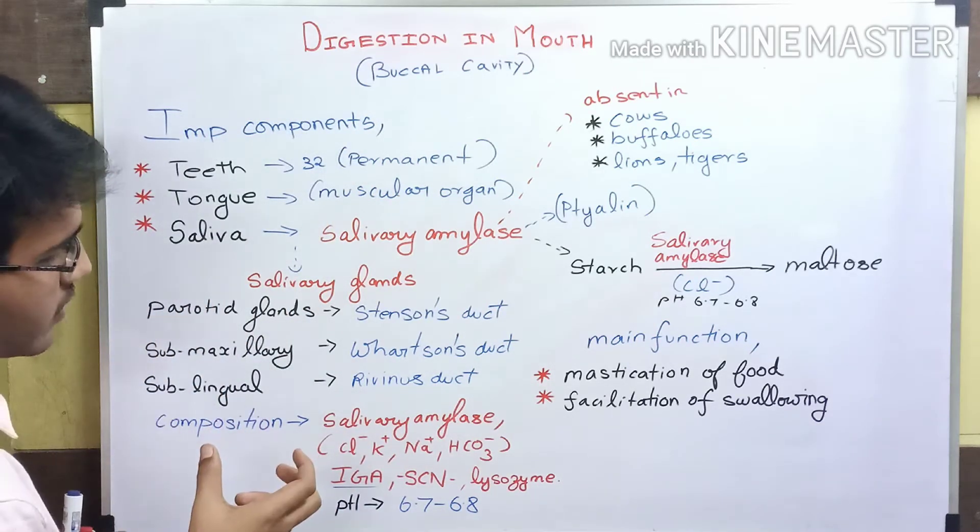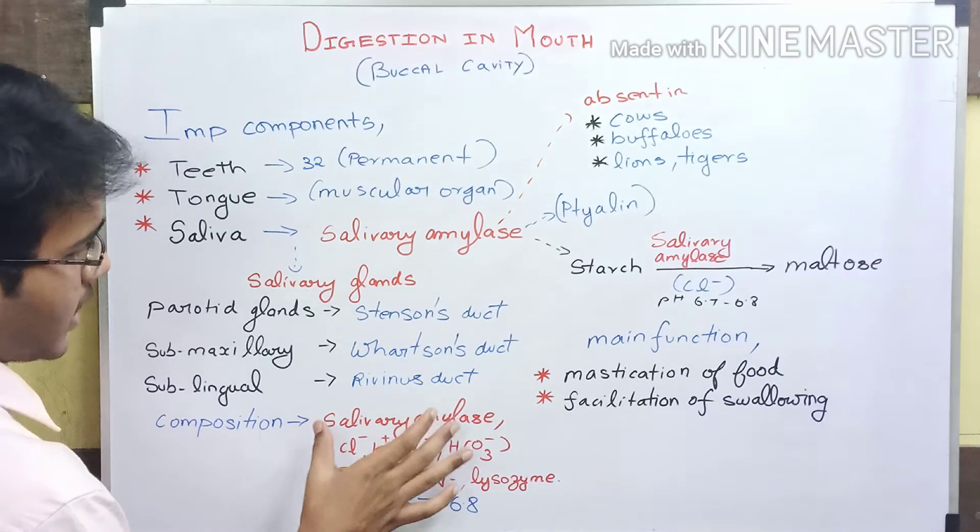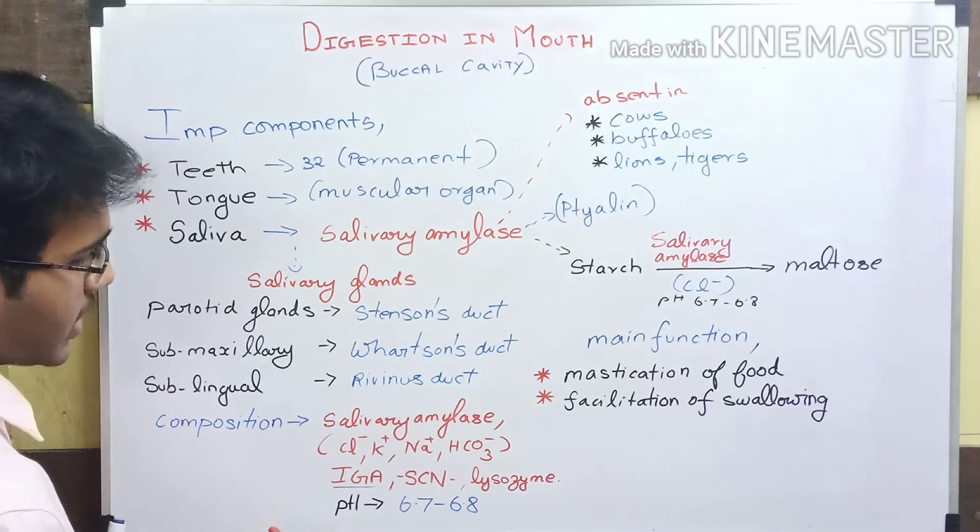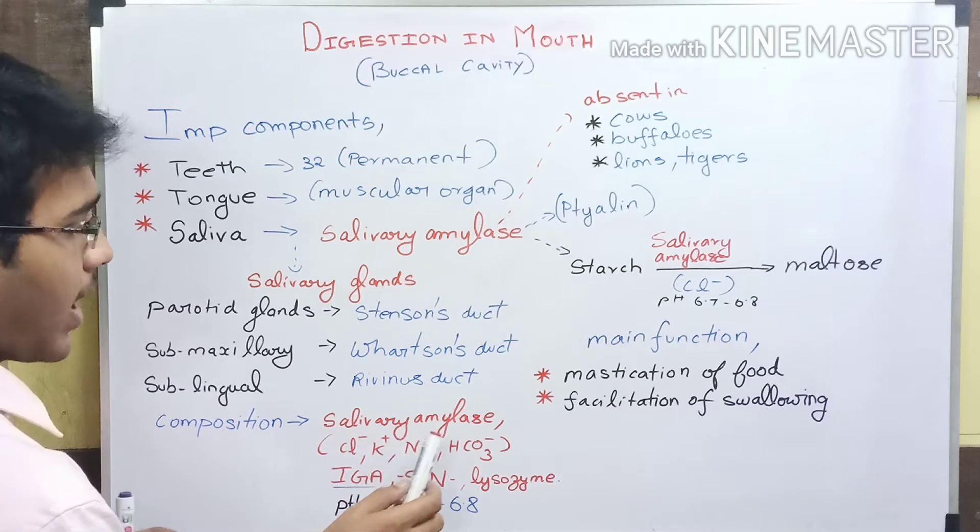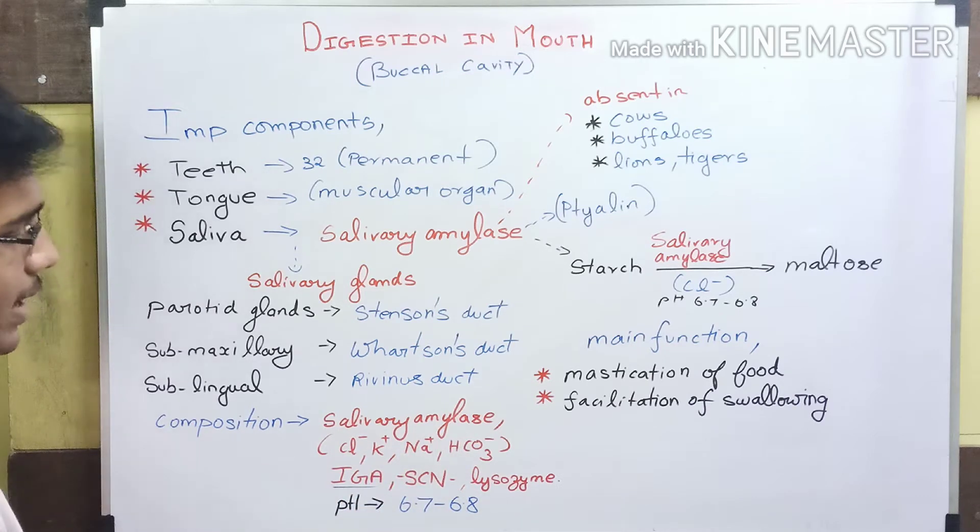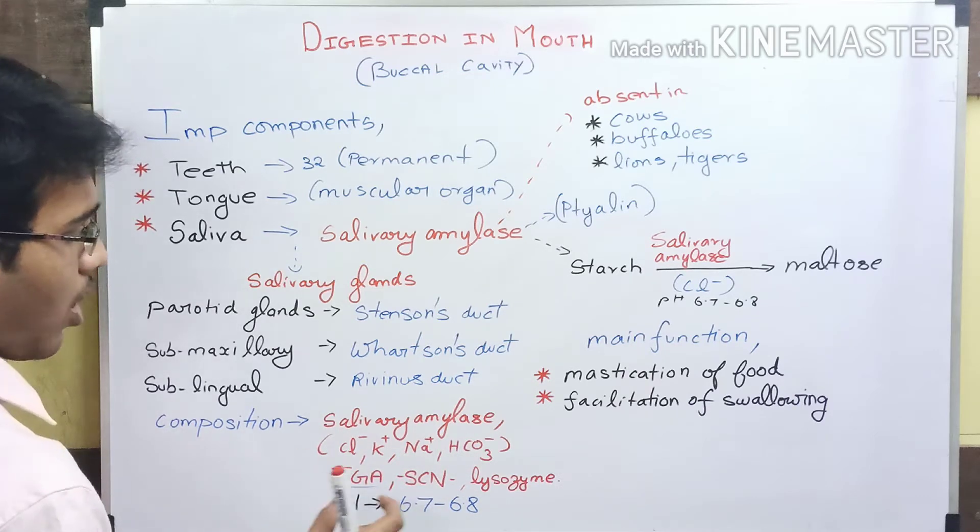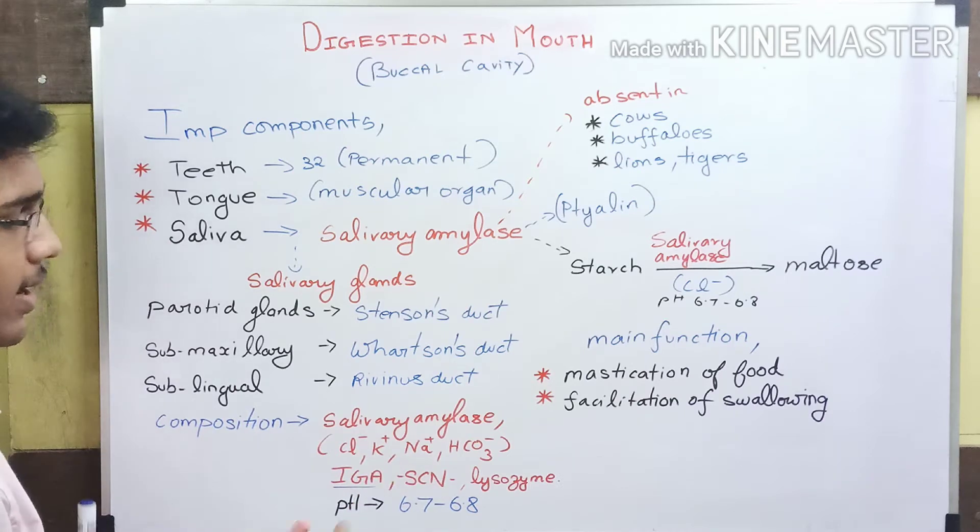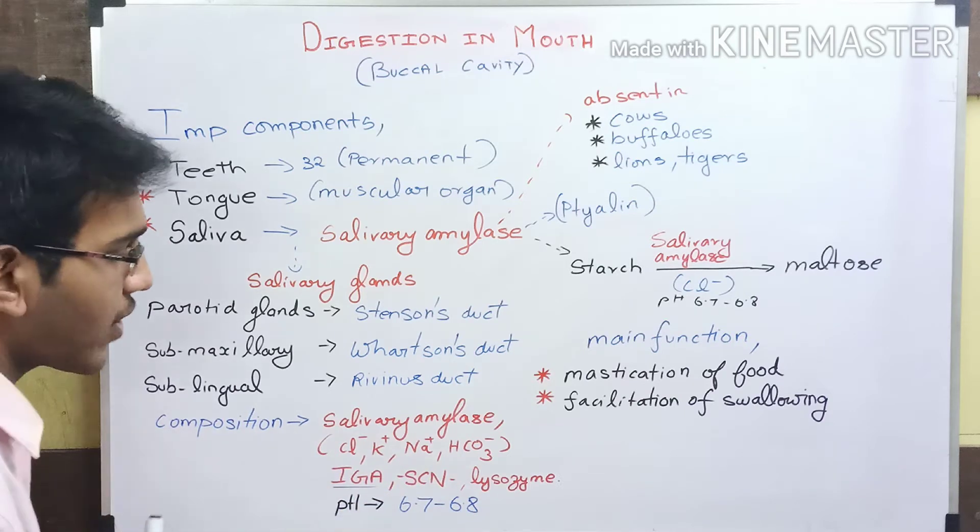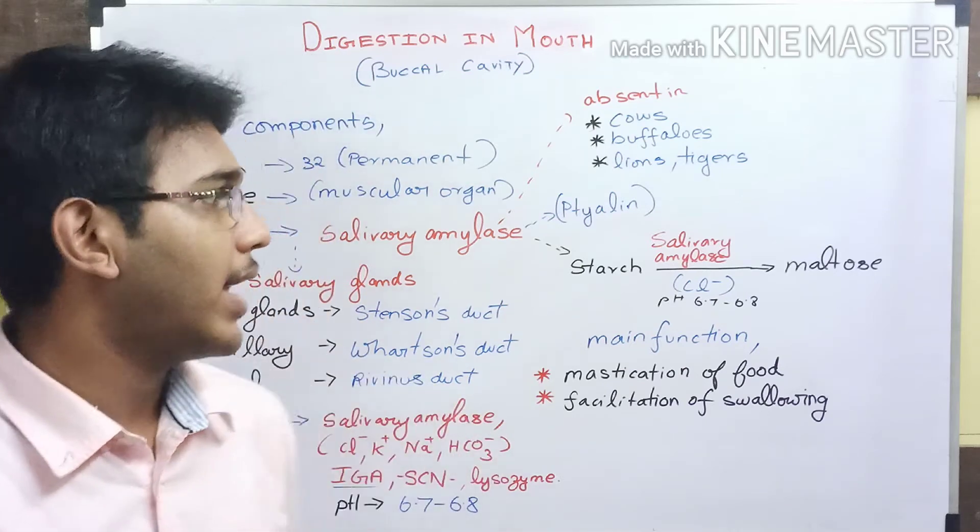Talking about the composition of saliva: saliva contains salivary amylase, ions such as chlorine, potassium, sodium and bicarbonate, and antibody IgA, compound thiocyanate, and lysozyme. The pH of saliva is 6.7 to 6.8.